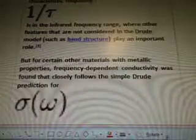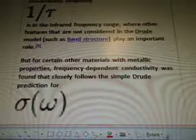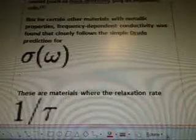But for certain other materials with metallic properties, frequency-dependent conductivity was found that closely follows the simple Drude prediction. There are materials where the relaxation rate of 1 divided by T is at much lower frequencies. This is the case for certain doped semiconductor single crystals, high mobility two-dimensional electron gases, and heavy fermion metals.